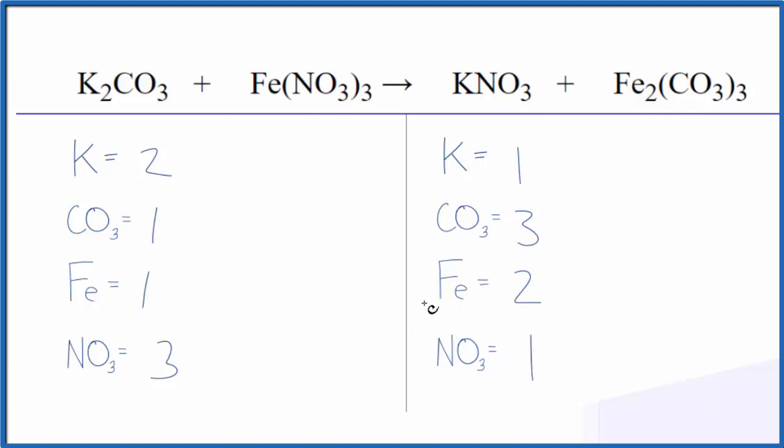Because I've done it this way, it's a lot clearer what I need to do to balance the equation. It looks like I could start by putting a two in front of the potassium nitrate. One times two, that would balance the potassium atoms. And then the one nitrate times the two, that would give me two nitrates.